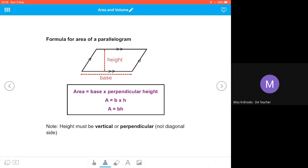So our formula for the area of a parallelogram is A equals bh or base times height.